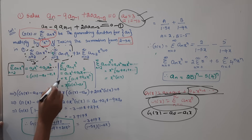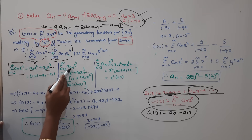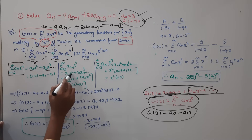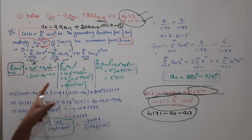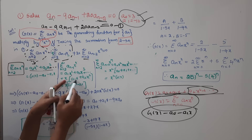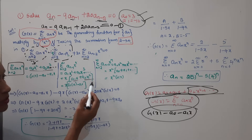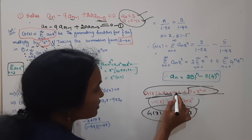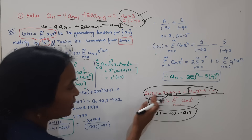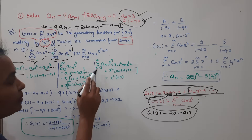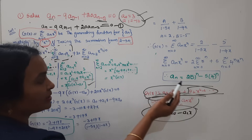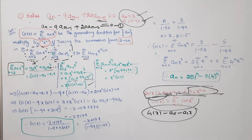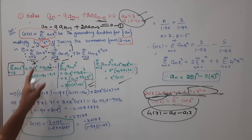For n equals d: aₙ₋₁ times x to the power n. For n equals 2: 2 minus 1 gives a₁ times x squared. For n equals 3: 3 minus 1 gives a₂ times x cubed. Taking x as common: a₁x plus a₂x² — and this term is G(x) minus a₀. Similarly, taking x² common: a₁ plus a₂x. The total is nothing but the generating function.